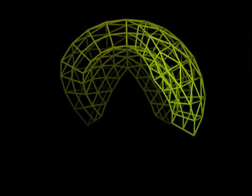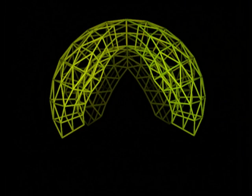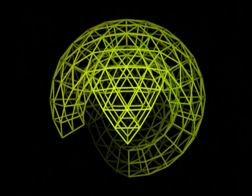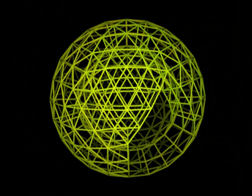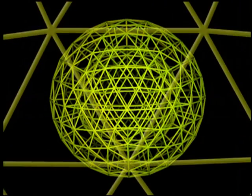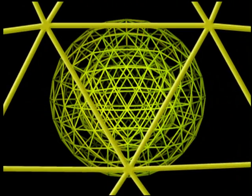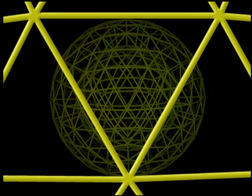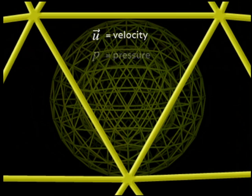Dr. Bunga lays a three-dimensional grid throughout the volume of the entire mantle. The grid is made up of 10 million grid cells. Each cell is assigned a set of properties that change as the model runs. The main properties that vary in this model are velocity, pressure, and temperature.